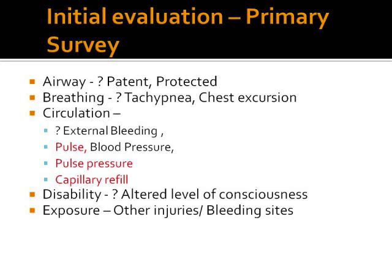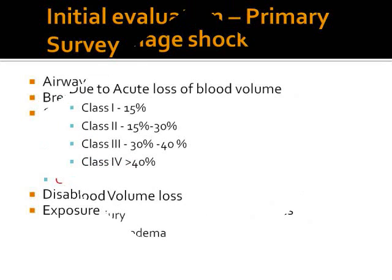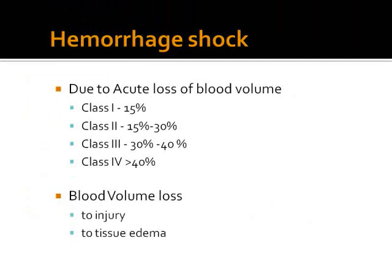There are four classes of hemorrhagic shock. Class 1 is when there is 15% loss of blood. Class 2, 15 to 30%. Class 3, 30 to 40%. And class 4, greater than 40% blood loss. The blood loss can be a result of injury with external or internal blood volume loss, or there can be injury to tissues leading to tissue edema and loss of intravascular volume.